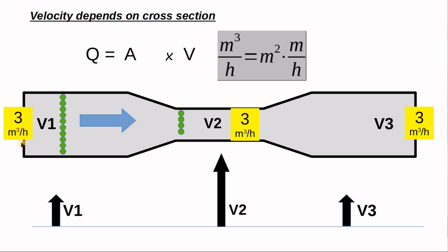Assume we have three cubic meters per hour going through a pipe whose cross section changes from four inch to two inch and then back to a larger size. The velocity is found by dividing the flow rate by the area. At the smaller cross section, the fluid must move much quicker than at the larger cross section — so V1 is small, V2 goes up, and V3 goes back down again.